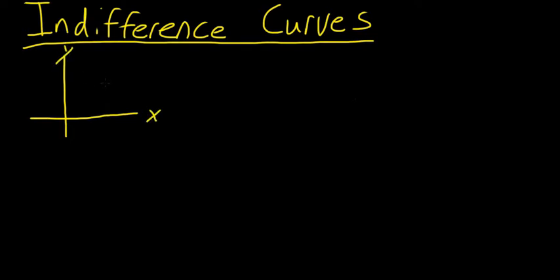Let's start off by picking a point. This point represents a bundle of goods. So if we're using a bundle that has both X and Y, these could represent anything — X could be apples, Y could be football. They can represent anything, but it's some bundle where I'm getting this much X and this much Y. So in this case, let's call this bundle 2, 2 — that is 2X and 2Y.